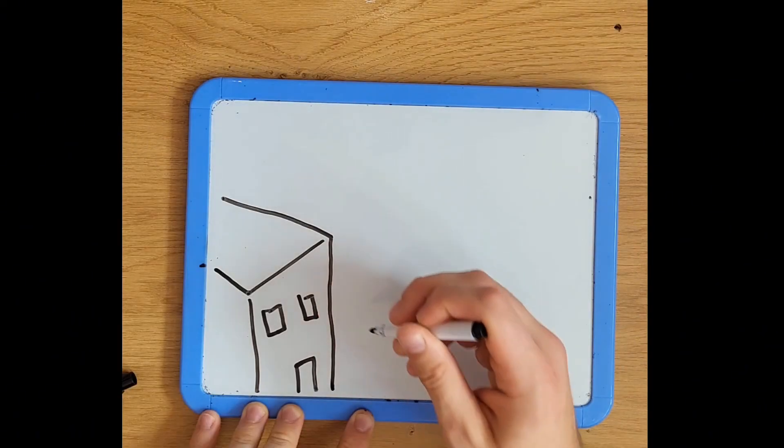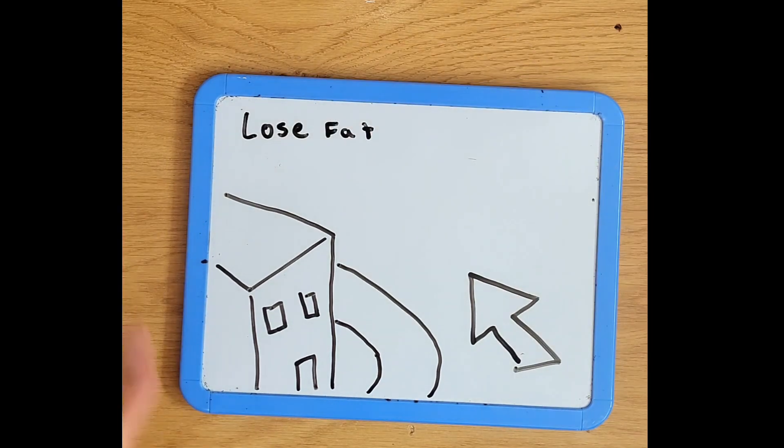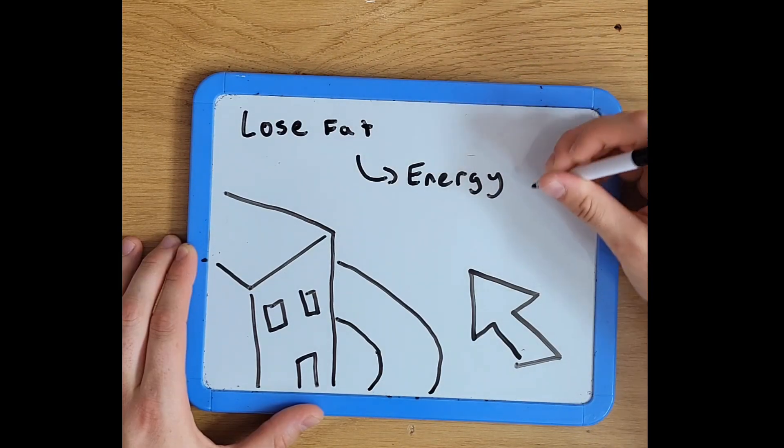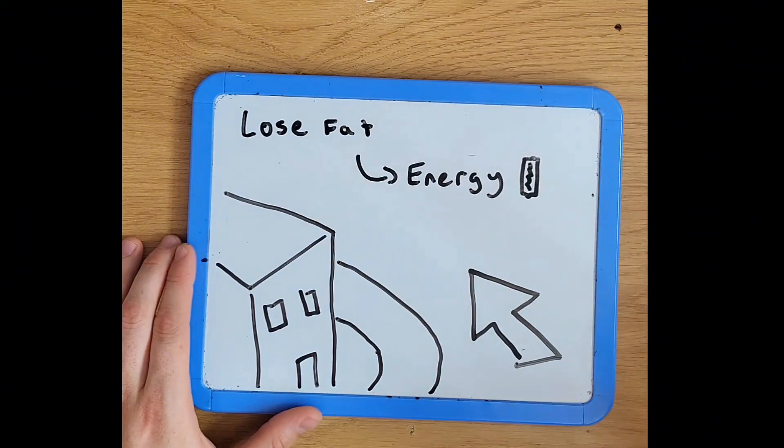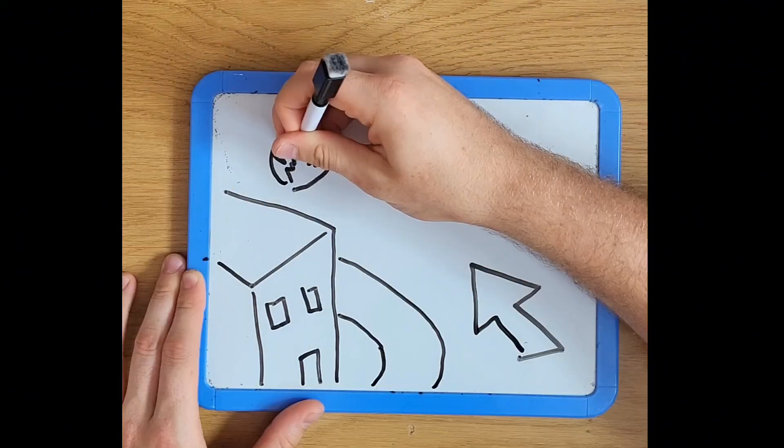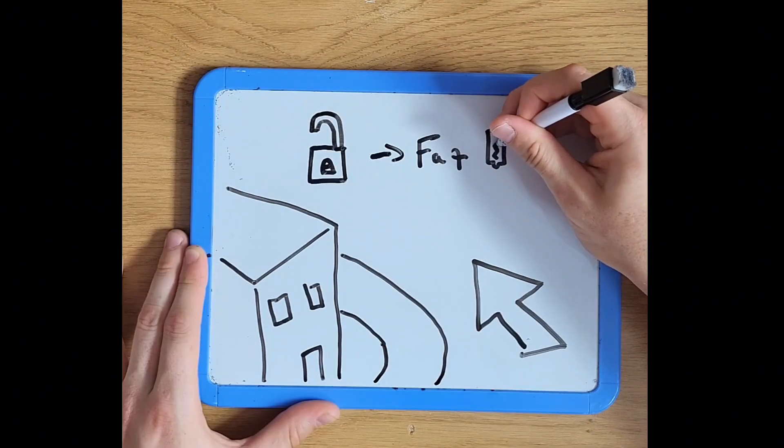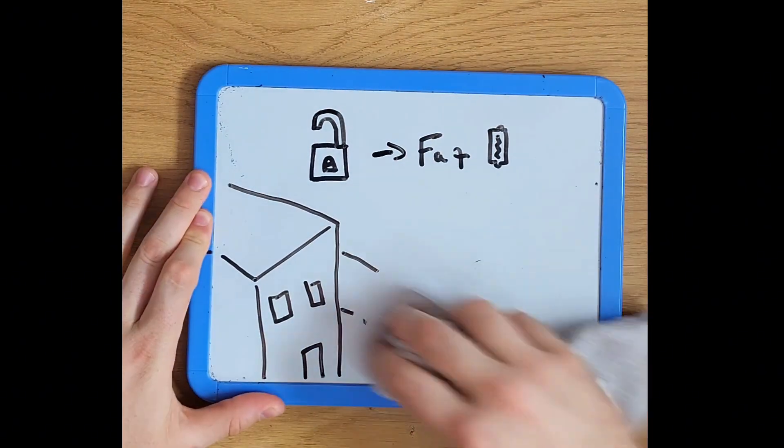But why? Because famine was always just around the corner. So when you're trying to lose fat today, what you're actually doing is trying to convince your body to tap into those energy reserves. That means you need to create a demand, a calorie deficit, where your body burns more energy than it takes in, forcing it to unlock those fat stores and use them as fuel.